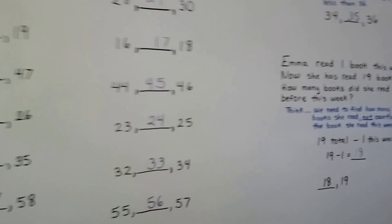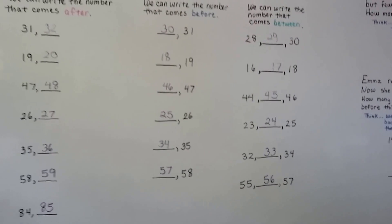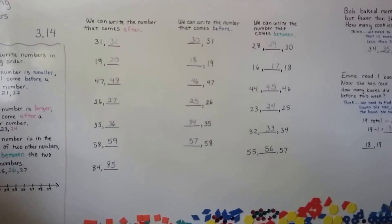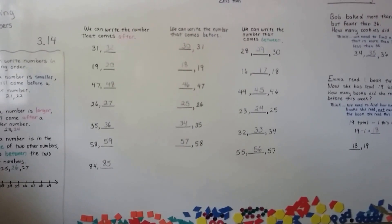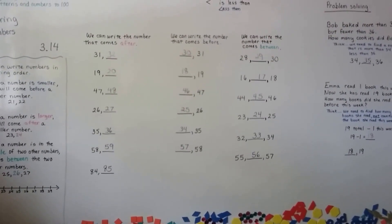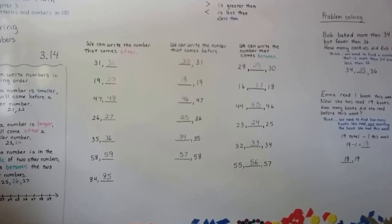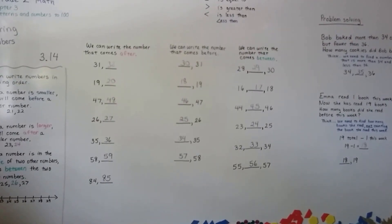So that's putting numbers in order. We can put them after, we can put them before, and we can put them in between. We can use counters and a number line to help us if we need it. I'll see you next video. Bye.